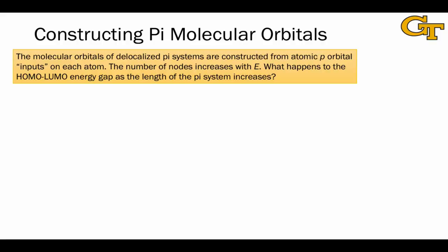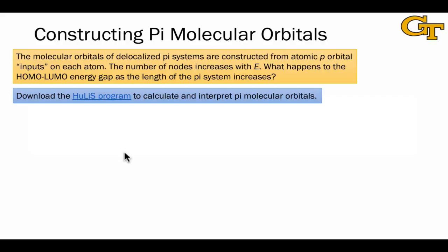All that said, you won't be expected to construct pi molecular orbitals from nothing. This gets complicated just because of the sheer number of orbitals involved. We're going to have as many pi orbitals as we have atoms in the pi system. Instead, we're going to use computer software to do this for us. These are basically miniature WebMO type programs that use this relatively simple method called the Huckel method to construct pi molecular orbitals.